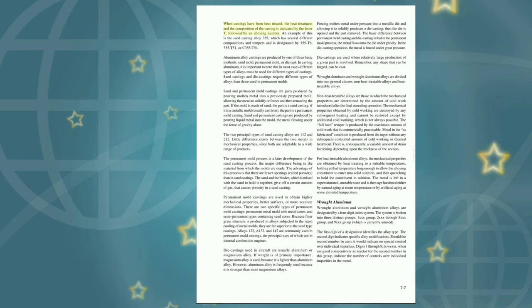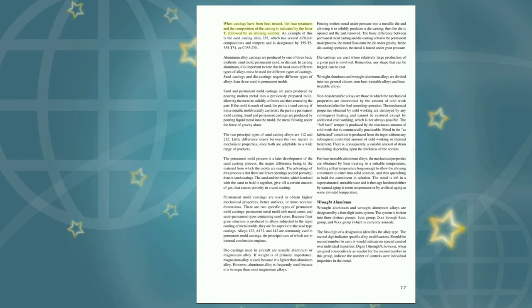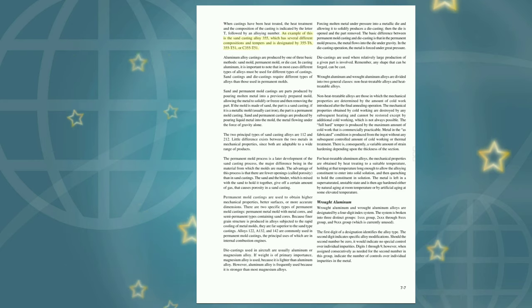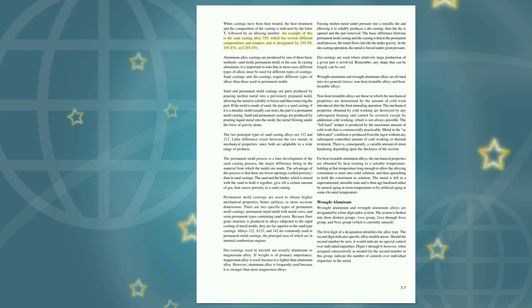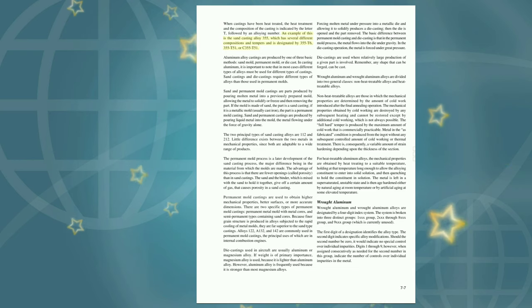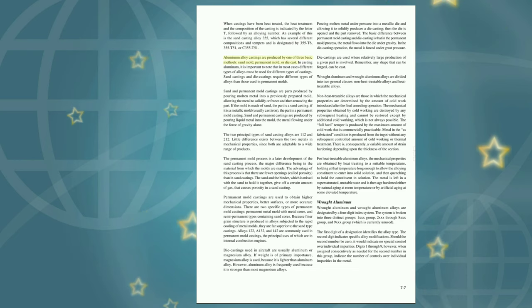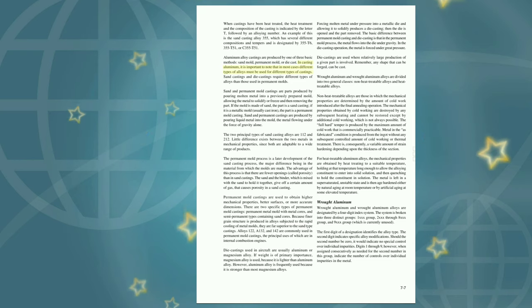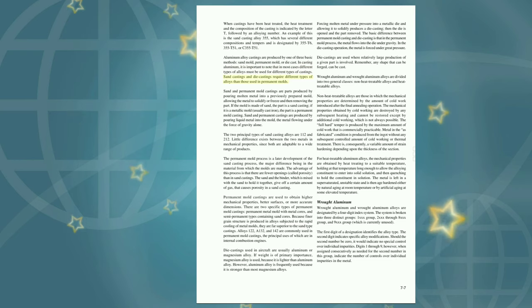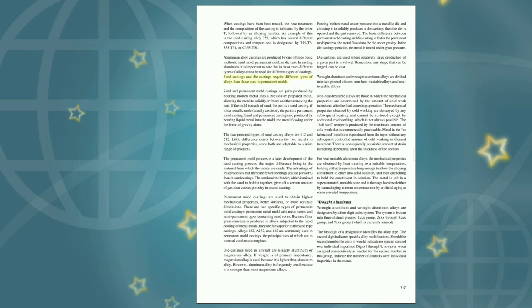When castings have been heat-treated, the heat treatment and composition are indicated by the letter T followed by an alloying number. For example, sand casting alloy 355 has several different compositions and tempers designated as 355-T6, 355-T51, or C-355-T51. Aluminum alloy castings are produced by one of three basic methods: sand mold, permanent mold, or die cast. In casting aluminum, different types of alloys must be used for different types of castings—sand castings and die castings require different alloys than those used in permanent molds.